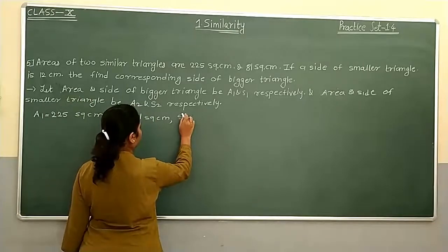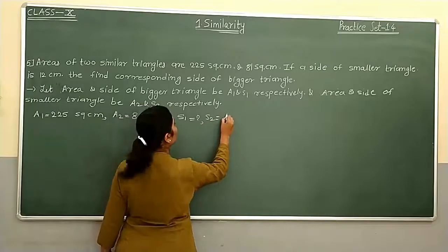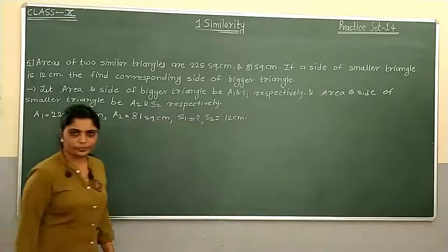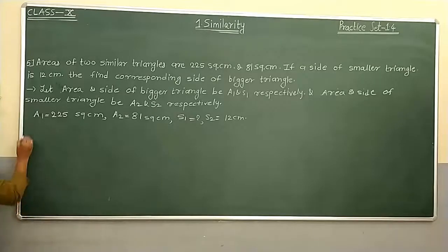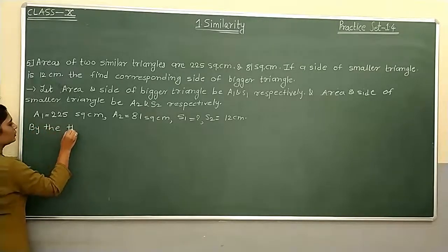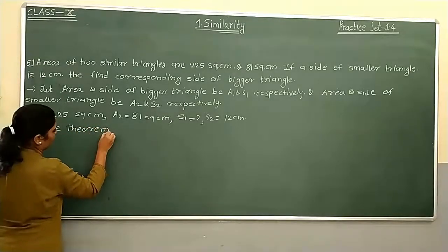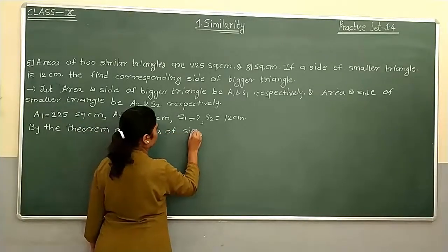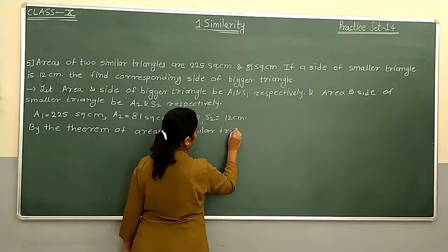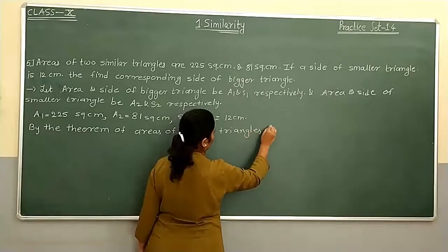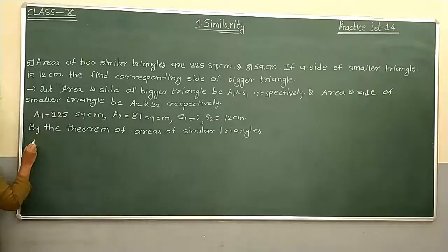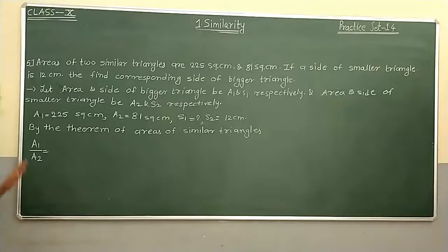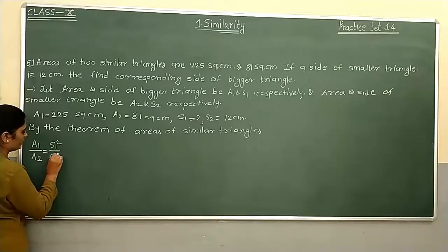By the theorem of areas of similar triangles: the ratio of areas of similar triangles is equal to the ratio of the squares of their corresponding sides. So A1 upon A2 equals S1 square upon S2 square.